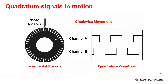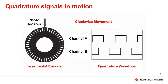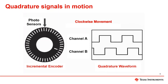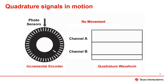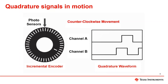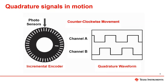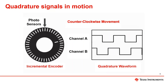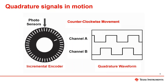Now let us look at a demonstration of the quadrature signals in motion. On the left is a 2D representation of the encoder and on the right are the generated quadrature signals from the rotation of the encoder. As the encoder moves clockwise at a constant velocity, notice that channel A is leading channel B. When the encoder stops, the quadrature signals pause at their current state. As the encoder changes direction and moves counterclockwise, the most notable observation is that channel B is now leading channel A.